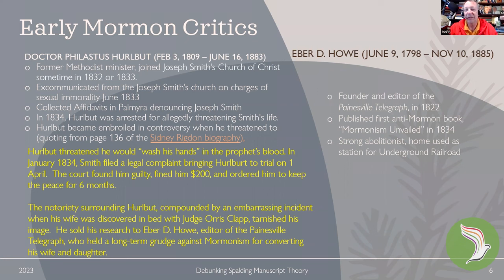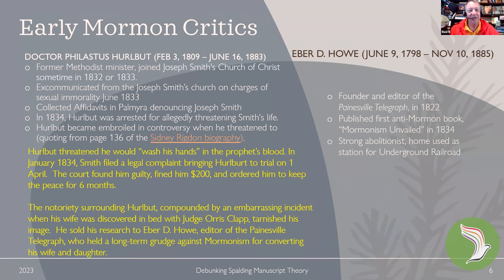The notoriety surrounding Hurlbut, compounded by an embarrassing incident when his wife was discovered in bed with Judge Orris Clapp, tarnished his image. He sold his research to Eber D. Howe, who was the editor of the Painesville Telegraph, and who held a long-term grudge against Mormonism for converting his wife and daughter. Eber D. Howe was born in 1798 and died in 1885, founder of the Painesville Telegraph from 1822. He published the first anti-Mormon book called Mormonism Unveiled in 1834. Dan Vogel actually published a scholarly edition where he footnoted all the charges in that book — highly recommended. One interesting note: Howe was actually a strong abolitionist and his home was used as a station for the Underground Railroad.